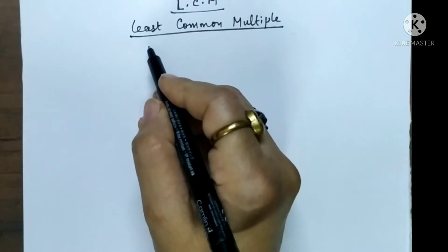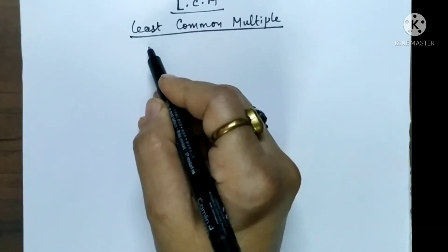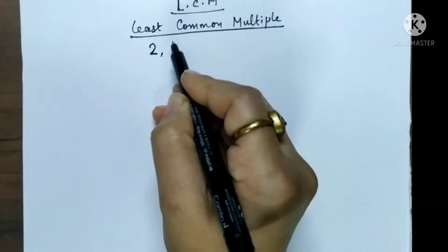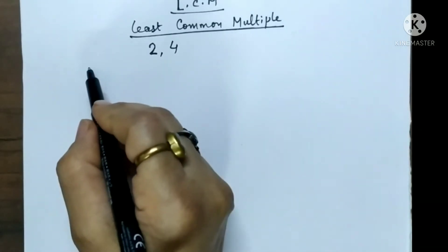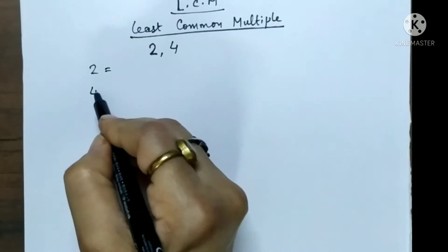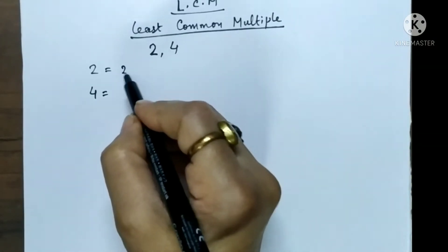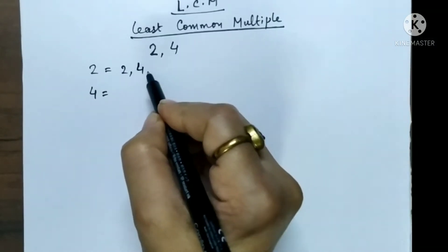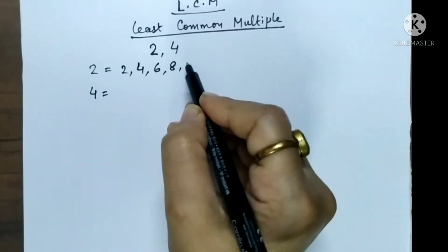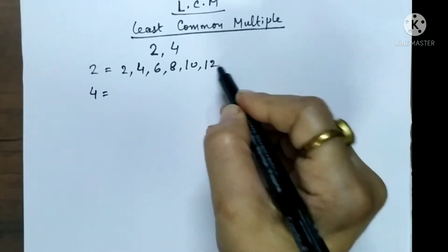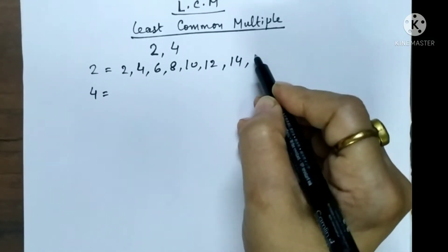So let's start. For example the numbers are 2 and 4. The first step is we have to write down the table of 2 and the table of 4. 2 ones are 2, 2 twos are 4, 2 threes are 6, 2 fours are 8, 2 fives are 10, 2 sixes are 12, 2 sevens are 14, 2 eights are 16.